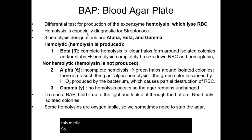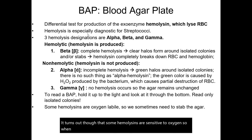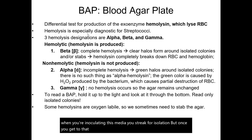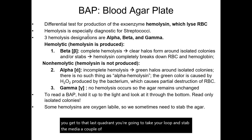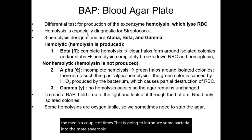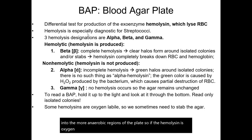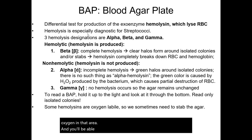Some hemolysins are sensitive to oxygen. So when you're inoculating this media, you streak for isolation, but once you get to that last quadrant, you're going to take your loop and stab the media a couple of times. That is going to introduce some bacteria into the more anaerobic regions of the plate. If the hemolysin is oxygen labile, it will still be able to work because there won't be much oxygen in that area, and you'll be able to determine what type of hemolysis the organism can do.